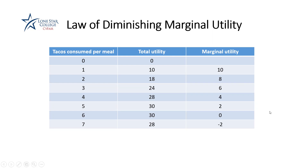Now let's check out marginal utility. As you eat more and more tacos, your marginal utility — the additional satisfaction from eating one more taco — is going to go down. It's pretty high when you eat the first taco, but since you are not as hungry as before, your marginal utility starts to decline. When your total utility is at its maximum, your marginal utility is zero. And whenever your total utility starts to decline — going from 30 down to 28 — your marginal utility becomes negative. That's a very important thing to remember.